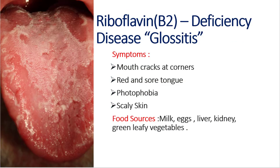The second B-complex deficiency disease involves riboflavin, that is vitamin B2. The deficiency disease is glossitis. If the food taken does not contain riboflavin, that person gets glossitis. Symptoms include mouth cracks at corners, red and sore tongue, photophobia — inability to see sunlight — and scaly skin. Food sources of B2 are milk, eggs, liver, kidney, and green leafy vegetables. Eating these food sources prevents glossitis.